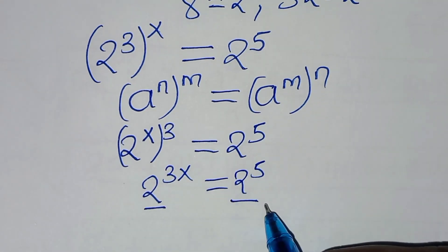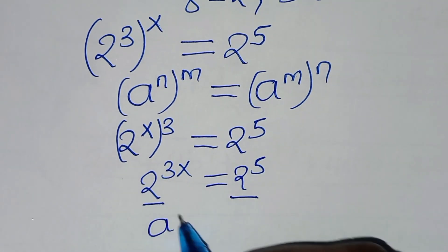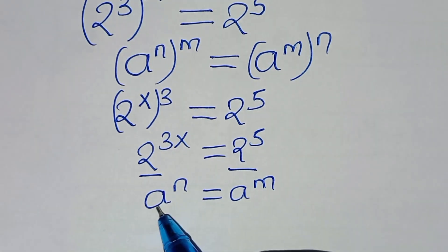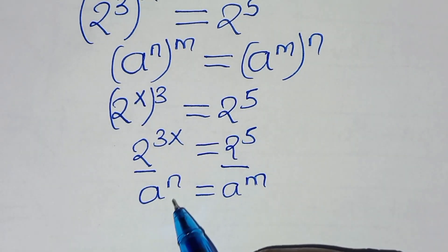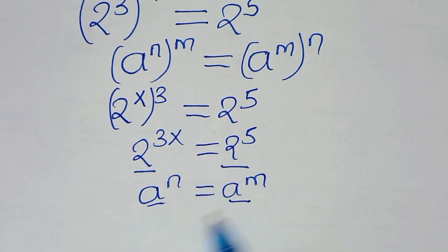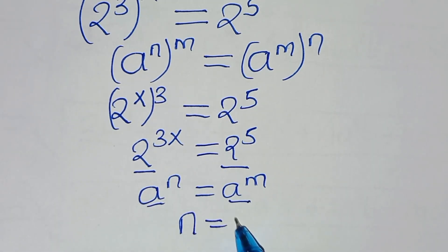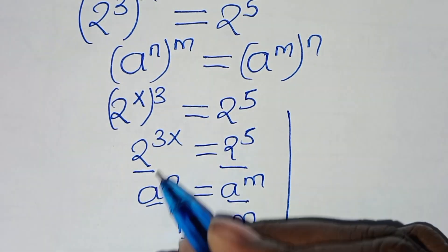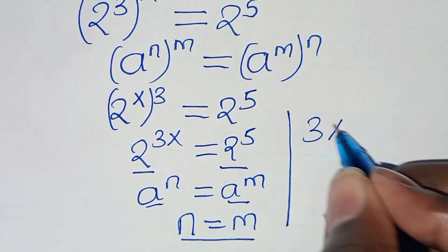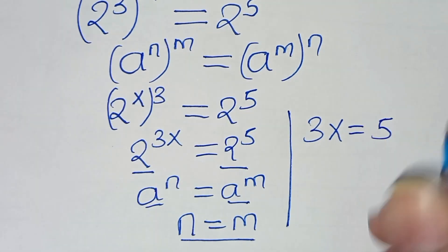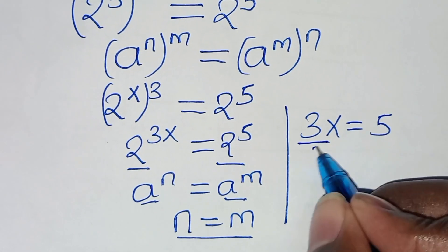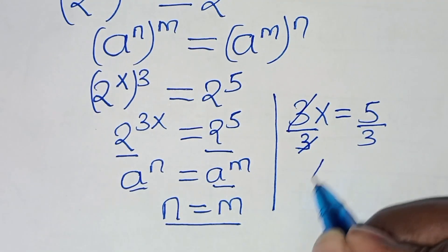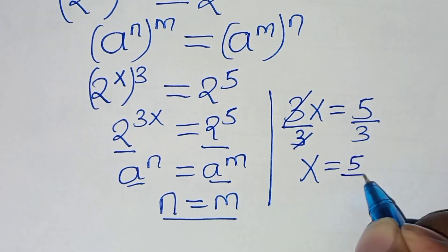Since the bases are common here, that is a to the power of n equals a to the power of m — applying this exponent property — then this means that if the bases are common, exponent n is equal to m. So this implies that from here, we have 3x is equal to 5. So let's divide both sides by 3, so that now x is equal to 5 over 3.